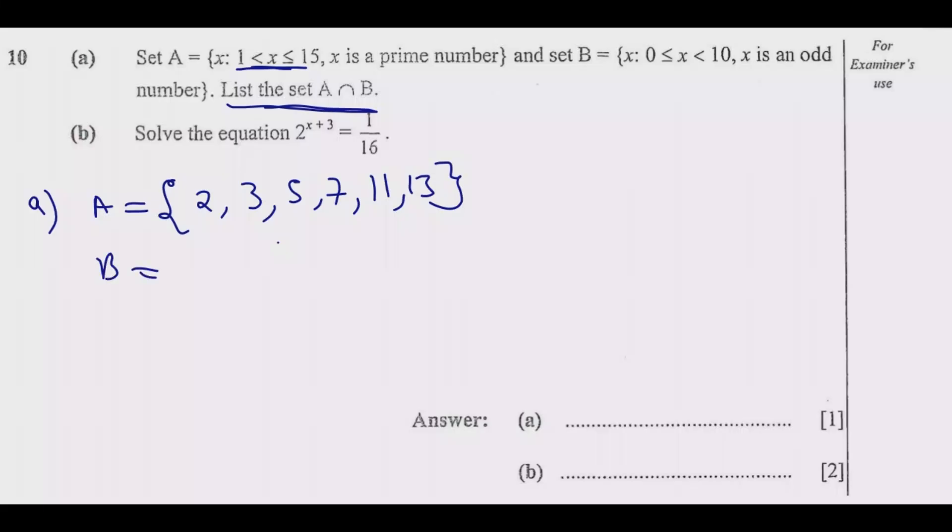Let us look for B. B are odd numbers, so x is an odd number but that number is greater or equal to 0 but less than 10. An odd number is a number where 2 can go and leaves a remainder.